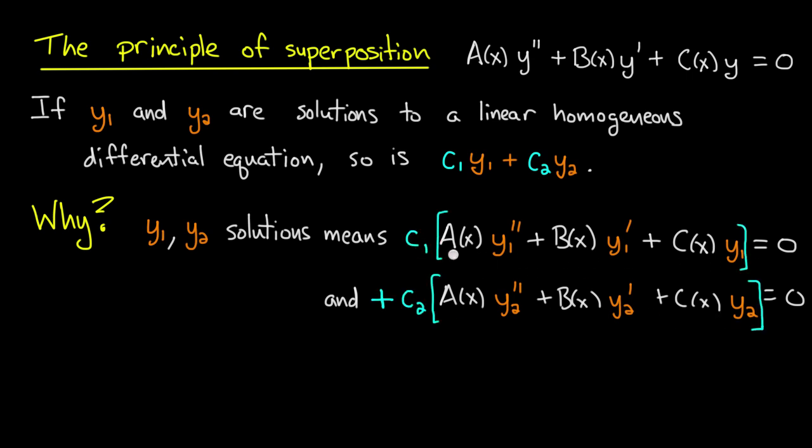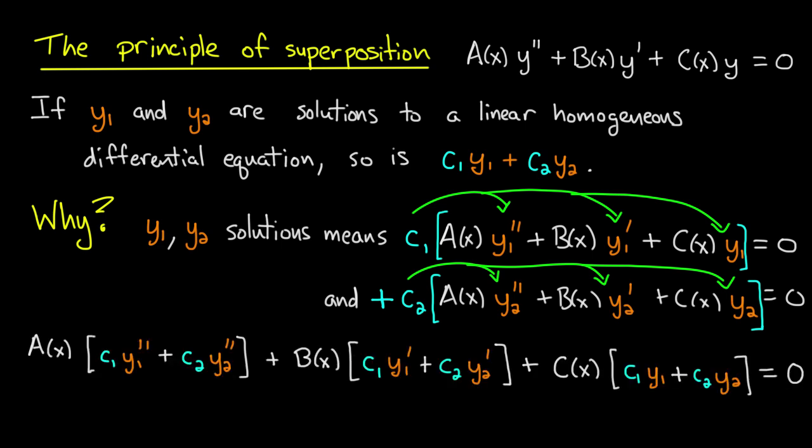So I take c1 times the first equation, and c1 times 0 on the right-hand side is 0, plus c2 times the second equation, and again c2 times 0 is still 0. Now let's distribute that c1 through the equation. So I put c1 next to y1 in all places, and c2 next to y2 in all places. Now I add them together and sort of collect all the terms.